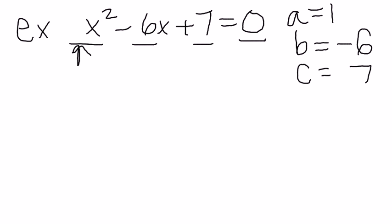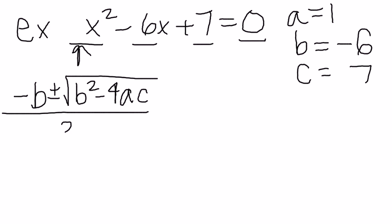Remember our quadratic equation looks like negative b plus or minus the square root of b squared minus 4 times a times c all divided by 2 times a. Now we are going to fill in these numbers into our equation.